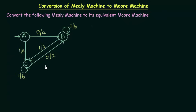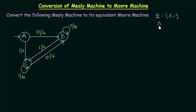How do we know that this is a Mealy Machine? We see that the outputs are associated to the transitions — this makes it clear that this is a Mealy Machine. Before we start, let's see what are our inputs and outputs in this example. Our inputs are 0s and 1s, and our outputs are A and B.